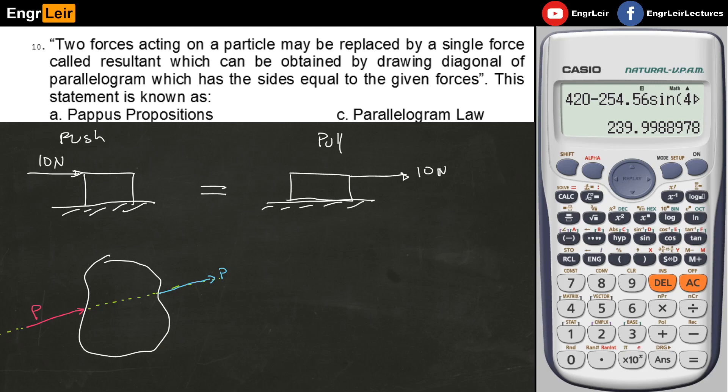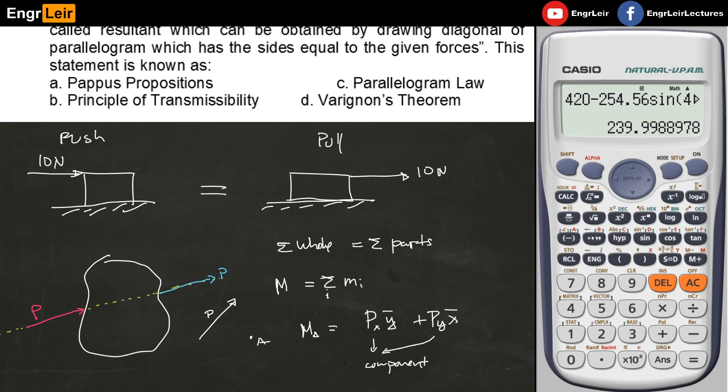Letter D, Varignon's Theorem - what is Varignon's Theorem? It states that the sum of the whole is equal to the sum of the parts. We use this in summation of moments - the moment of the whole object equals the summation of moments of its small parts. That's why we can find the moment using components. If I have a point here and a force P, the moment at point A of P equals the summation of the moment of the components: Px times y bar plus Py times x bar. These are the components, the parts of the vector or force P. That's Varignon's theorem.